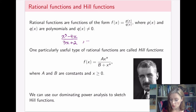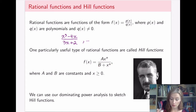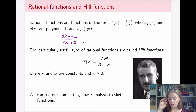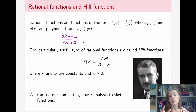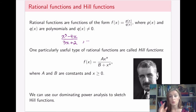Hill functions have a specific form: a coefficient times a power function on top, divided by a constant plus x to the n on the bottom, where the powers on the top and bottom are always the same. Hill functions are named after Archibald Hill, a British physiologist who won the 1922 Nobel Prize for his work on heat production and mechanical work in muscles. One of the biggest strengths of math is that once you have a function, the mathematical analysis always applies the same way.